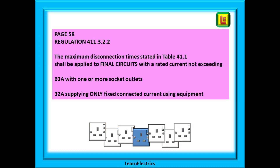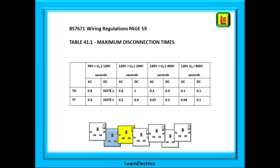Now that we know why we have disconnection times, where do we get the information from? Let's start on page 58 of the 18th edition wiring regulations book. On page 58 you will find regulation 411.3.2.2, which tells us to use the disconnection times in table 41.1 on the next page. This is for final circuits with a rated current not exceeding 63 amps for a circuit with one or more sockets, or not exceeding 32 amps for a circuit with fixed equipment.